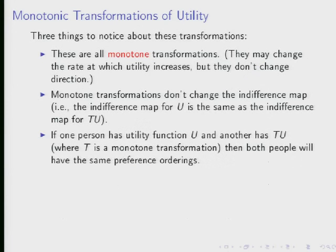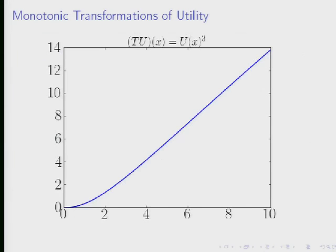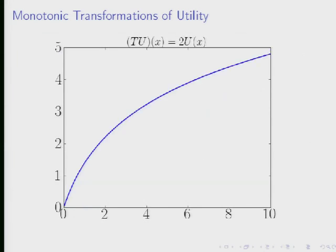All the examples I've given so far are monotonic transformations. They change the rate at which utility increases, but they're not going to change the direction. They always prefer more to less. They don't change the indifference map either. If we had a more complicated commodity space, it still wouldn't change the indifference map. So the indifference map we get for any of these utility functions are the same.